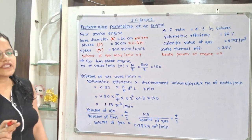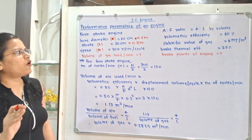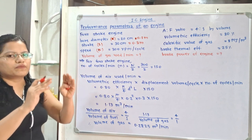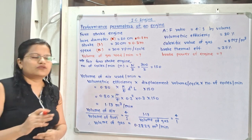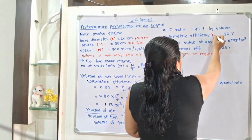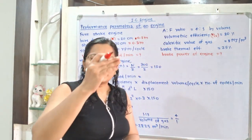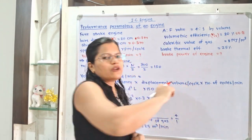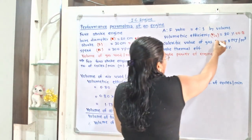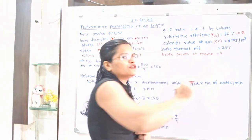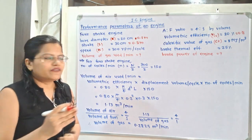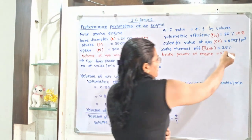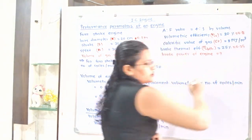Air-fuel ratio is 4 by 1 by volume, so volume of air divided by volume of fuel is equal to 4 by 1. Volumetric efficiency, notation eta_V, is 80%, that is 0.8. Calorific value, notation CV, is 8 megajoule per meter cube. Brake thermal efficiency, notation eta_BTH, is 25%, that is 0.25.